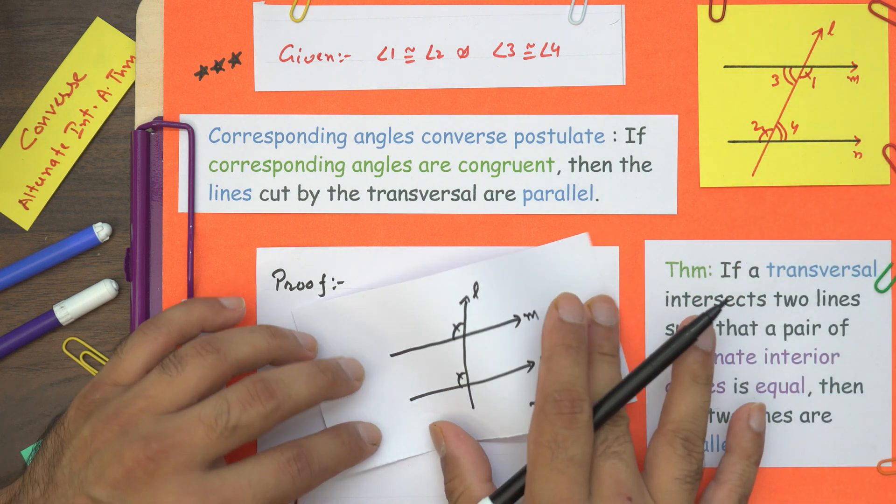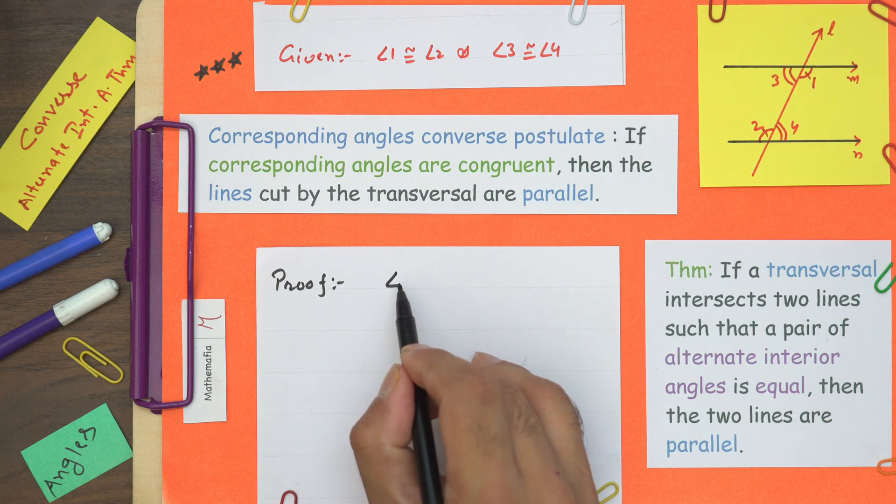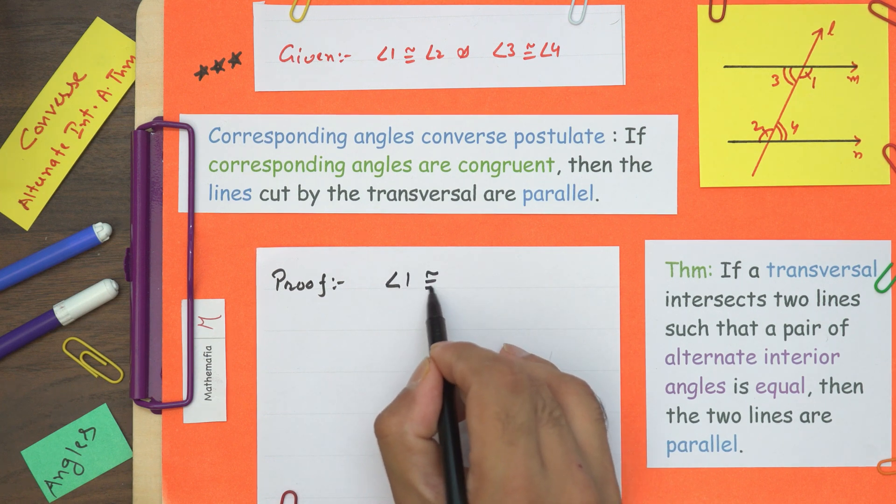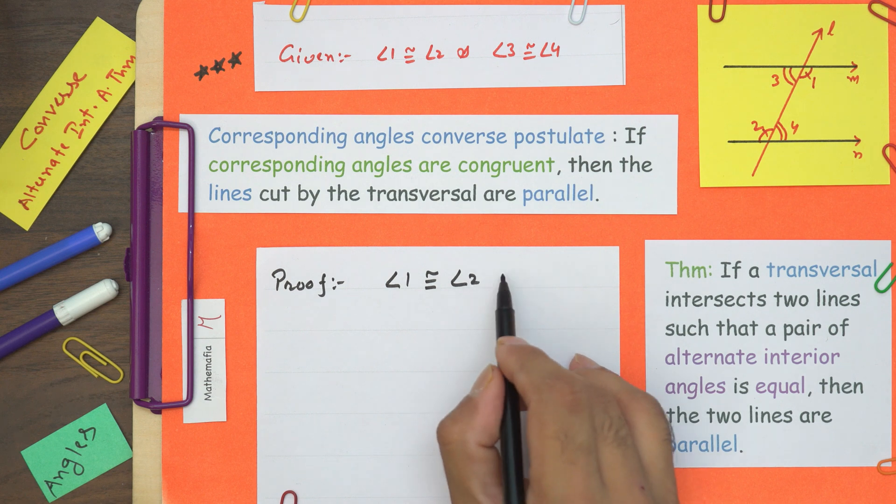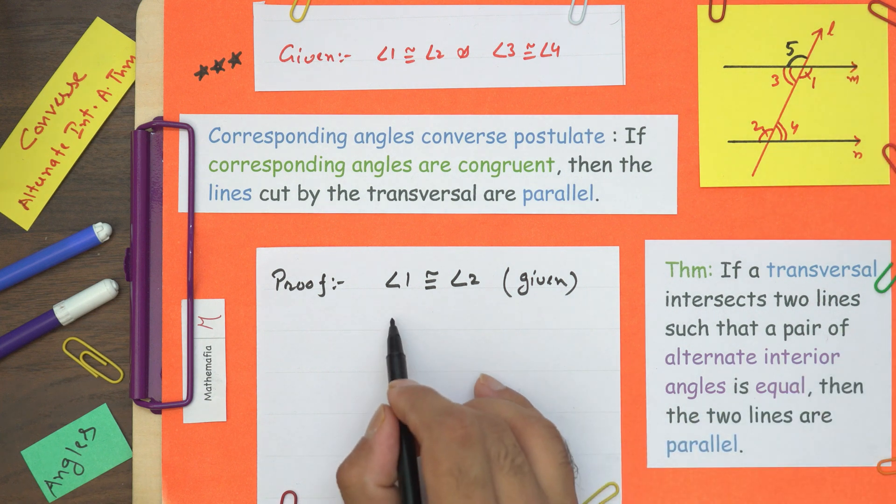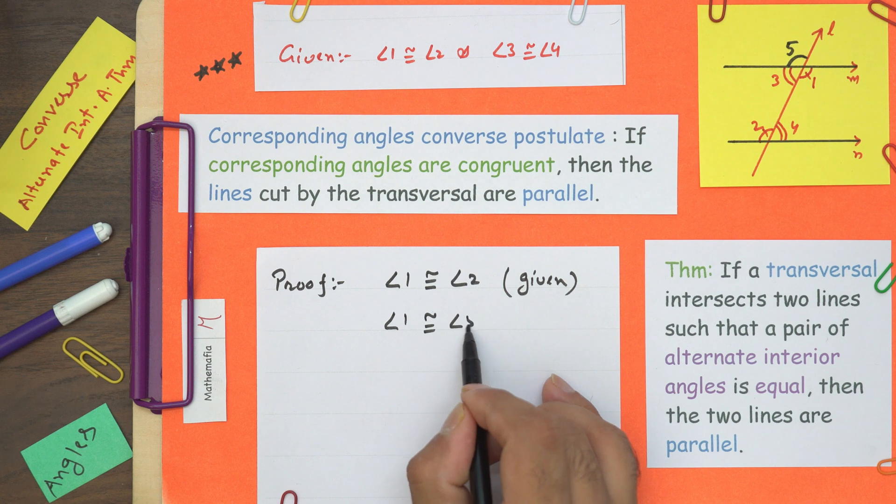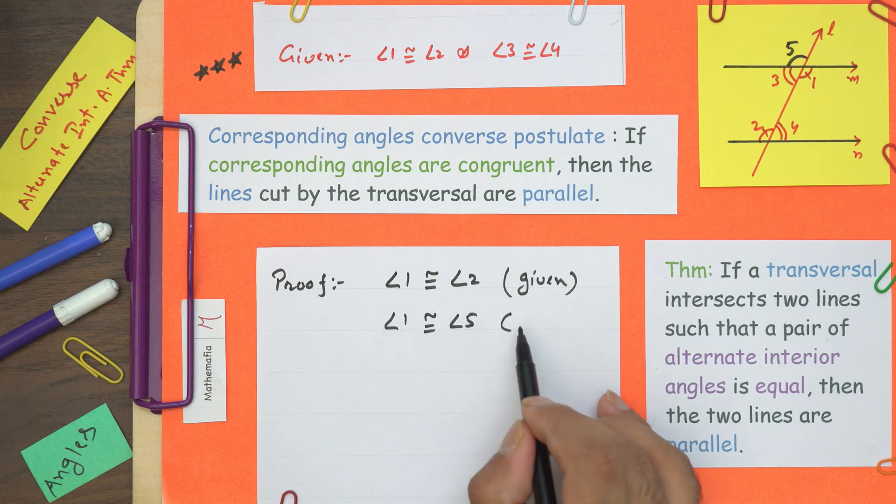First of all, angle 1 is congruent to angle 2. This is given, right? Let's now draw one more angle over here. I'm drawing angle 5. Now angle 1 is congruent to angle 5 as well. Why? Because these are vertically opposite angles.